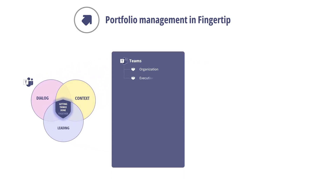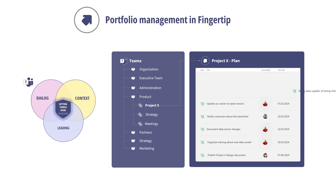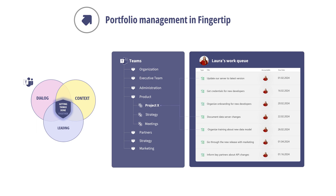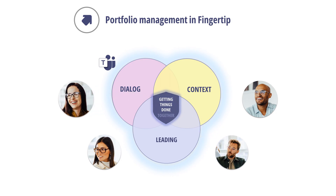Fingertip gives a transparent, cross-domain view for leadership of the status of all projects without additional reporting, all the way to the task level. It simultaneously helps individuals see their personal action points and deadlines in a single view across all projects, while they are navigating their daily work in Teams. Fingertip creates a digital standard for strategy — context-based dialogue and collaborative leadership keeps stakeholders informed and aligned with high satisfaction.